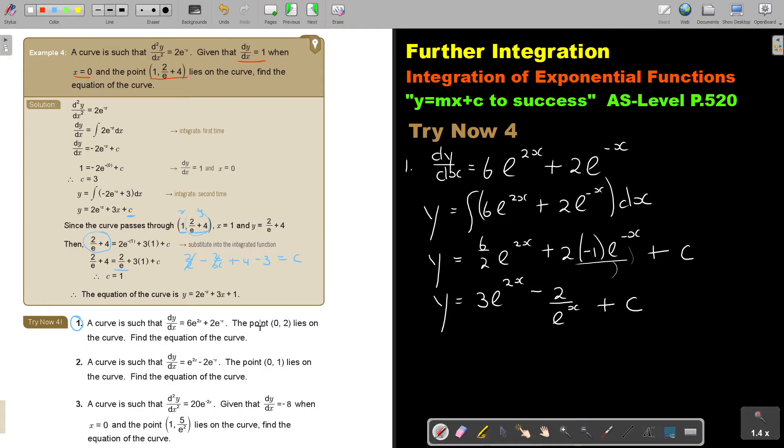Now, I can go and substitute this point in. So if (0,2) is on the curve, then in the place, this is x, and this is y.